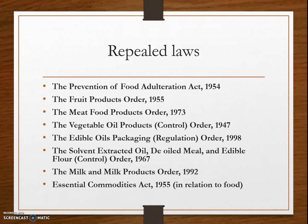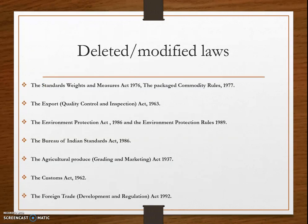Another set of laws were deleted or modified with the formation of FSSA. These include: the Standards of Weights and Measures Act 1976, the Packaged Commodity Rules 1977, the Export Quality Control and Inspection Act 1963, the Environment Protection Act 1986 and Environment Protection Rules 1989, the Bureau of Indian Standards Act 1986, the Agriculture Produce Grading and Marketing Act 1937, the Customs Act 1962, and the Foreign Trade Development and Regulation Act 1992.